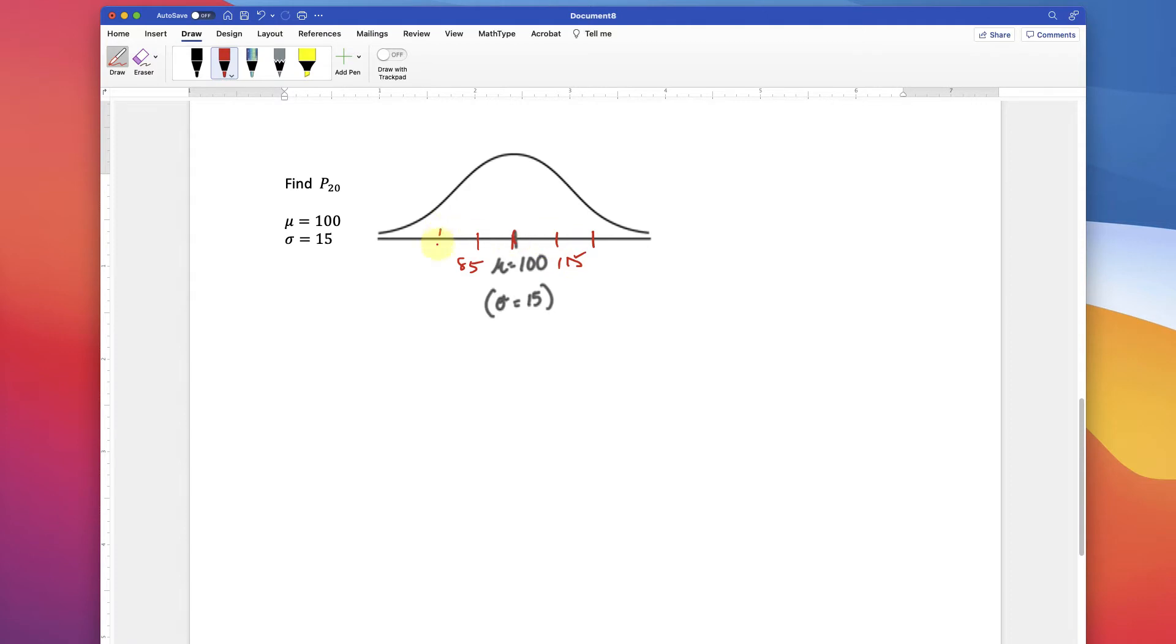Two standard deviations, et cetera, and keep moving out into three. And we want to find where is the probability that I go and shade like this, right? I shade 20%. Where does that happen? Where's 20%?